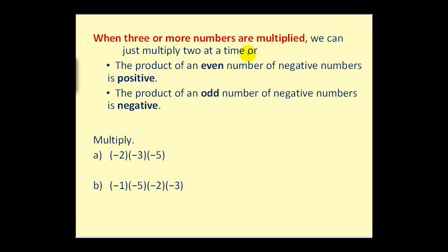When 3 or more numbers are multiplied, we can multiply two at a time and follow the rules already discussed. Or: the product of an even number of negative numbers is positive, and the product of an odd number of negative numbers is negative. For example, on part A we have 3 negative numbers being multiplied together. 3 is odd, therefore this product must be negative. We multiply the absolute values: 2 times 3 is 6, times 5 gives us 30. So the answer is negative 30.